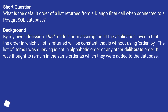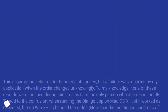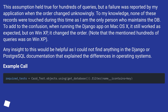Background. By my own admission, I had made a poor assumption at the application layer in that the order in which a list is returned will be constant — that is, without using order_by. The list of items I was querying is not in alphabetical order or any other deliberate order. It was thought to remain in the same order in which they were added to the database.